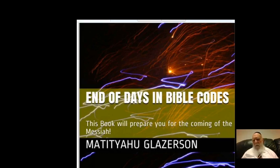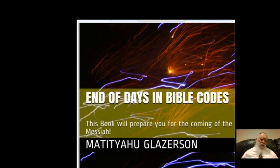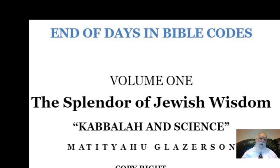What I'm going to show you now are a few important tables from my book 'End of Days in Bible Code.' The book prepares you for the coming of the Messiah. As you see, the Bible codes — the Torah codes — are very significant for this time of the Messiah. They are basically Messianic Torah codes. The tables you're going to see will give you a general outlook of the book. The book is 'End of Days in Bible Code, Volume One: The Splendor of Jewish Wisdom, Kabbalah and Science.'